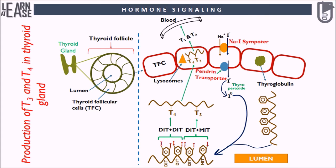Textbooks have stated that diffusion is the main means of transport, but recent studies indicate that monocarboxylate transporter 8 and 10 play major roles in the efflux of thyroid hormones from thyroid cells. In the blood, T3 and T4 bind to a protein known as thyroid binding protein and travel in the bloodstream.